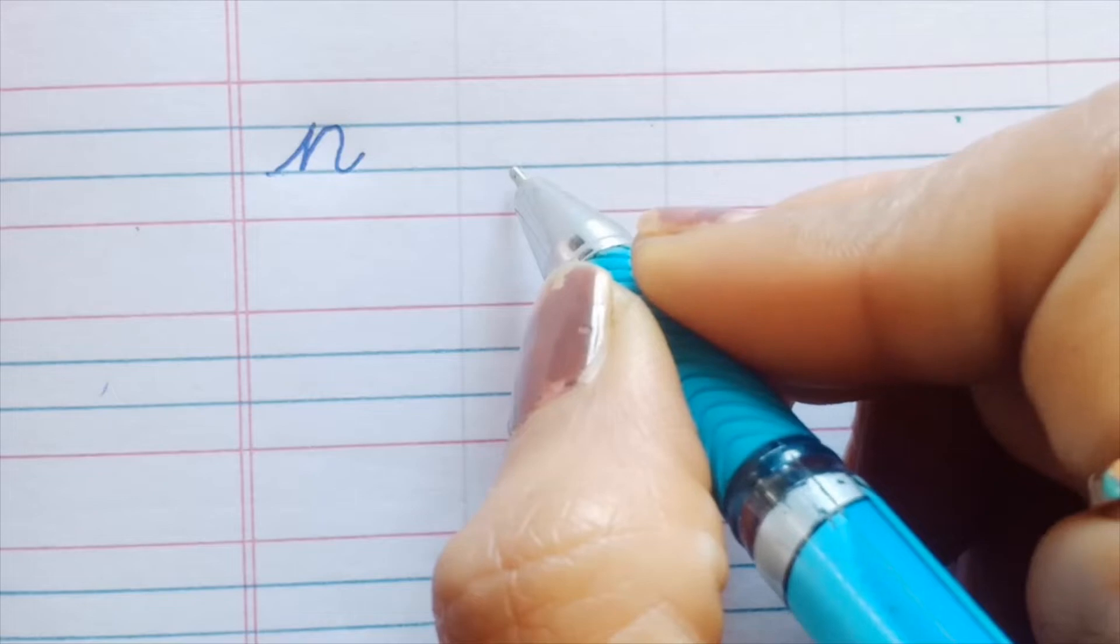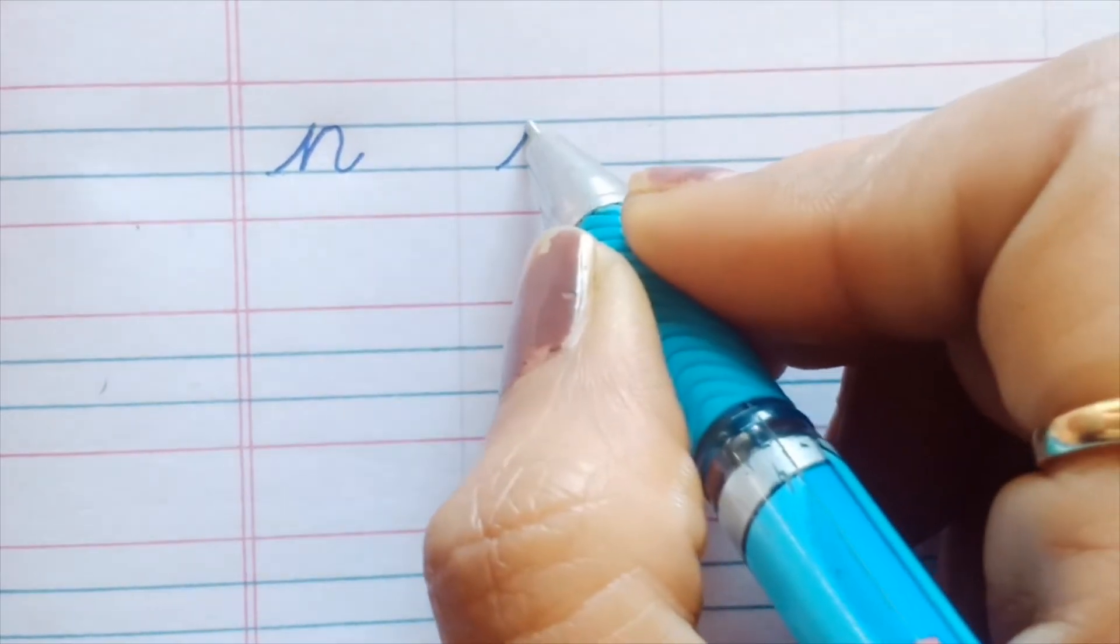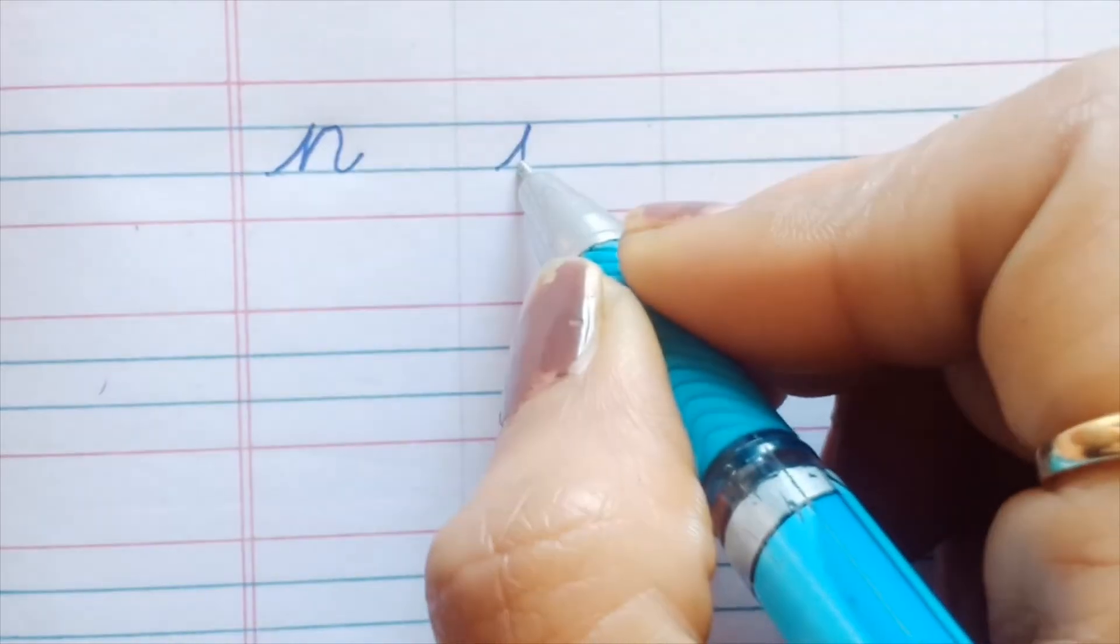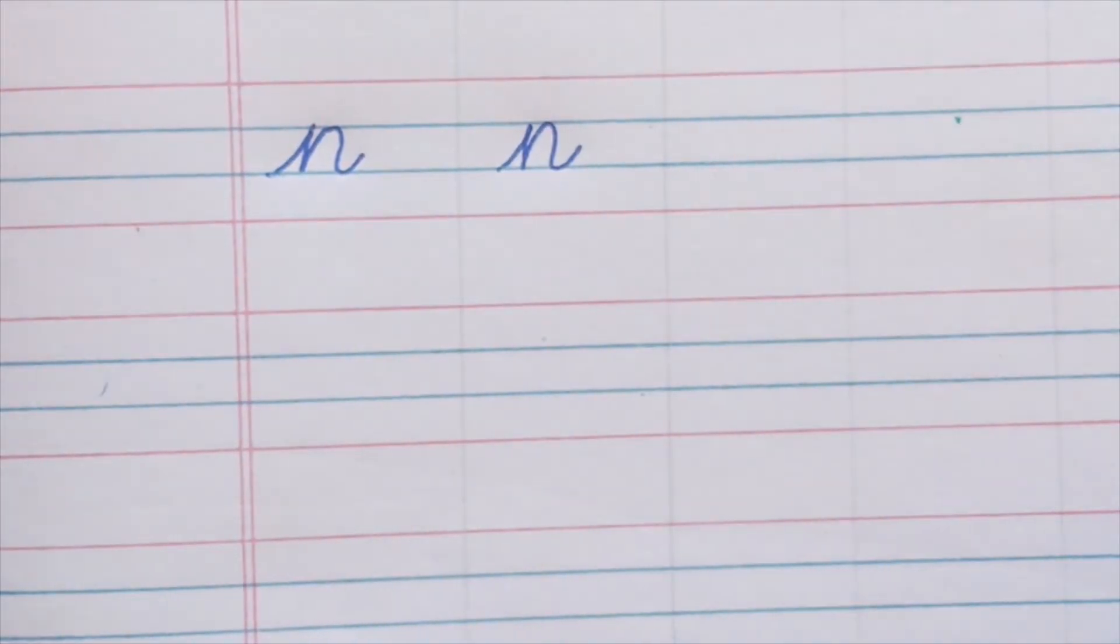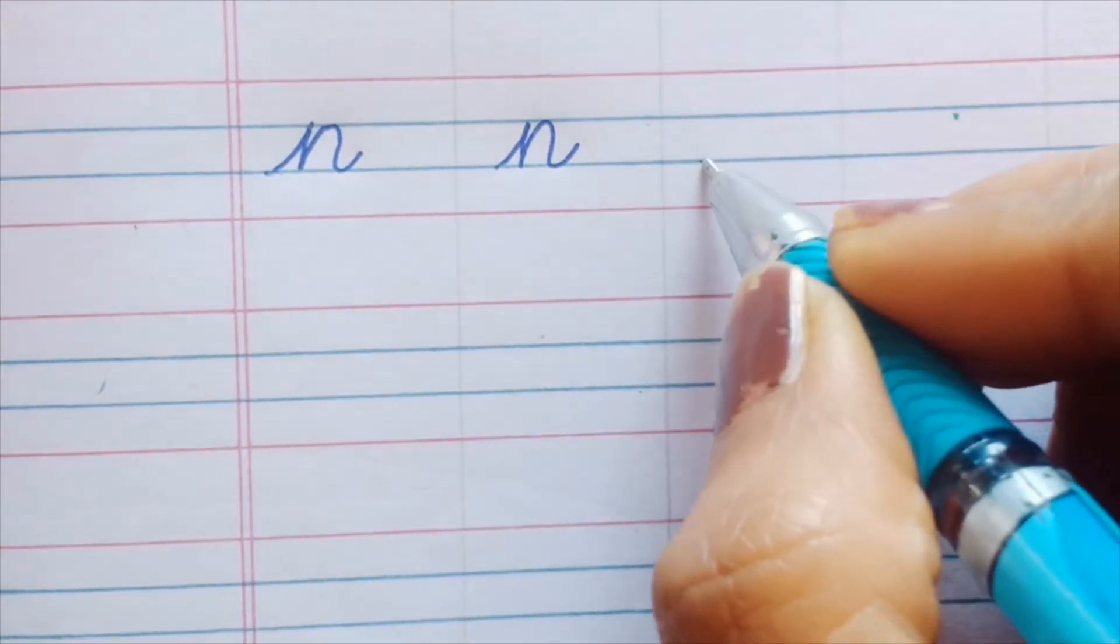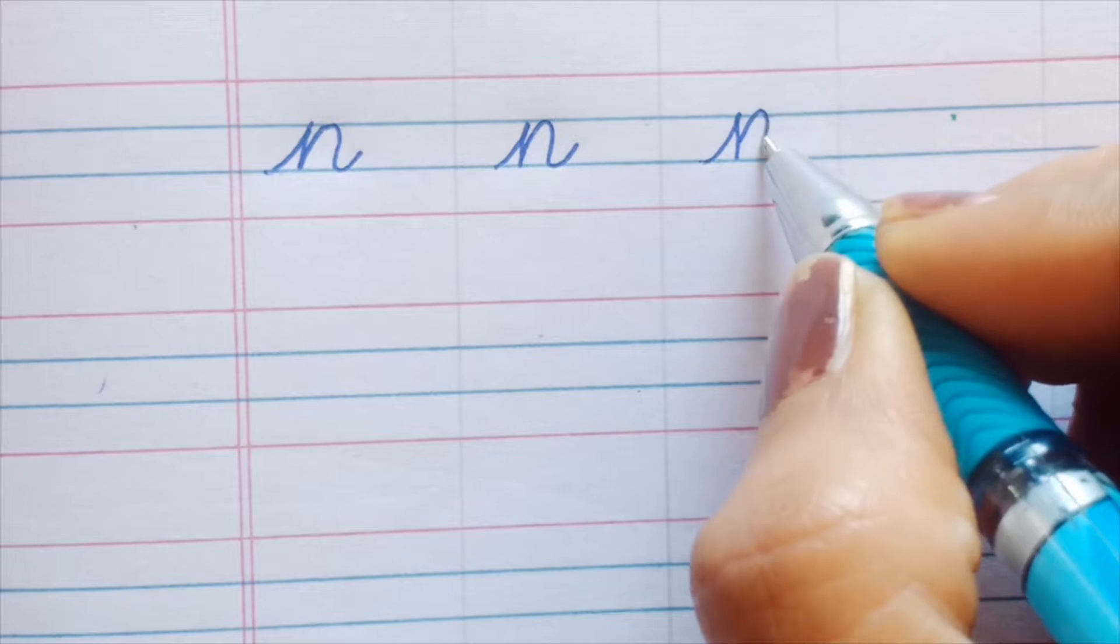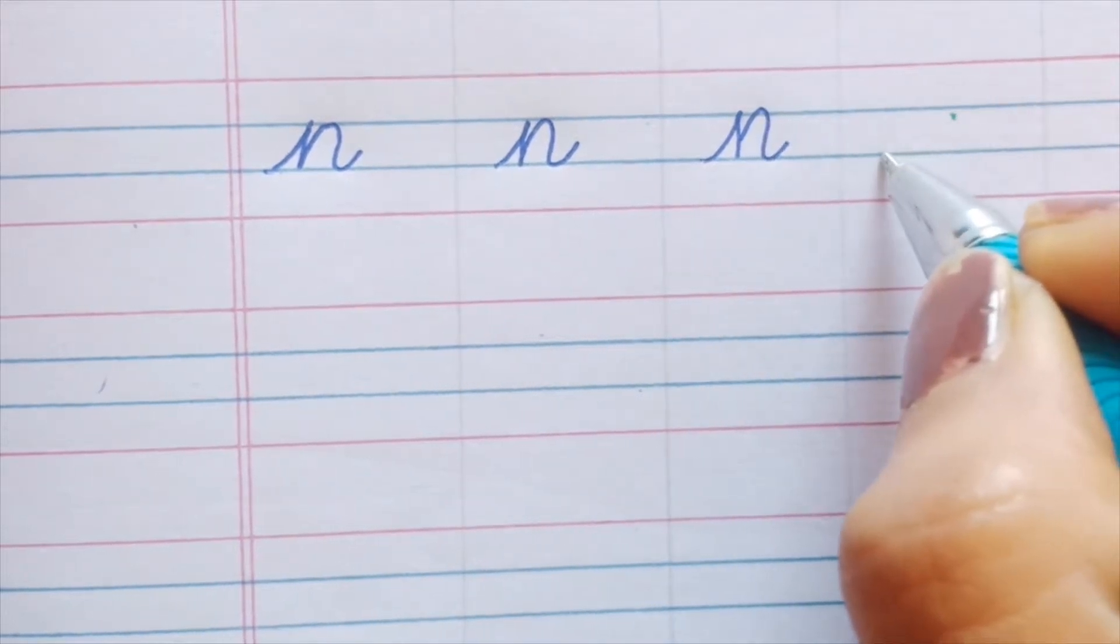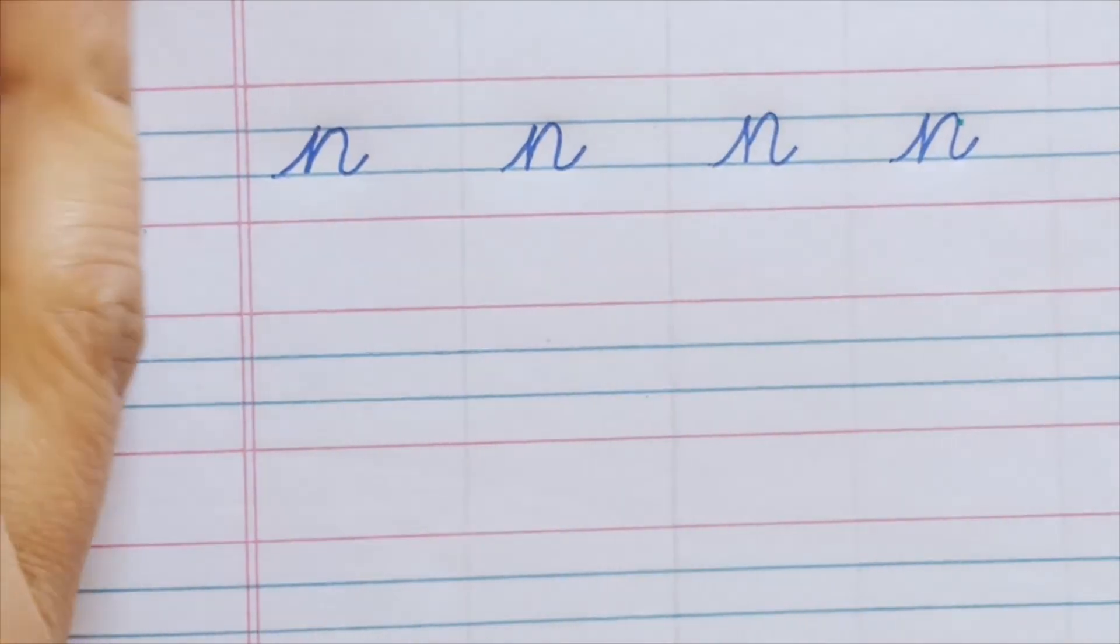So let's do once again: first stroke, then straight line, and trace this line in a curve along with the tail. Let's do it again: first, second, third and fourth. First, second, third and fourth.